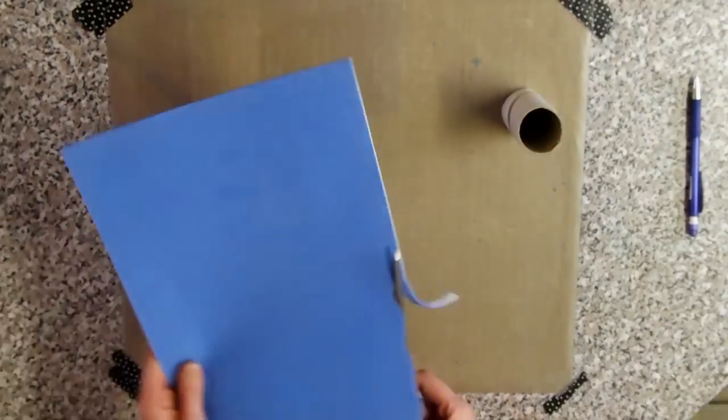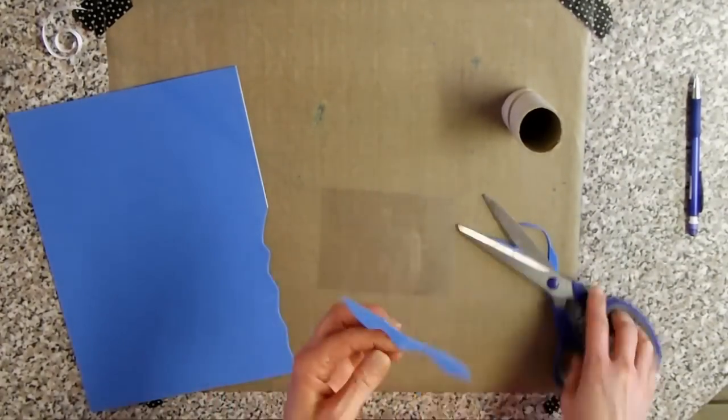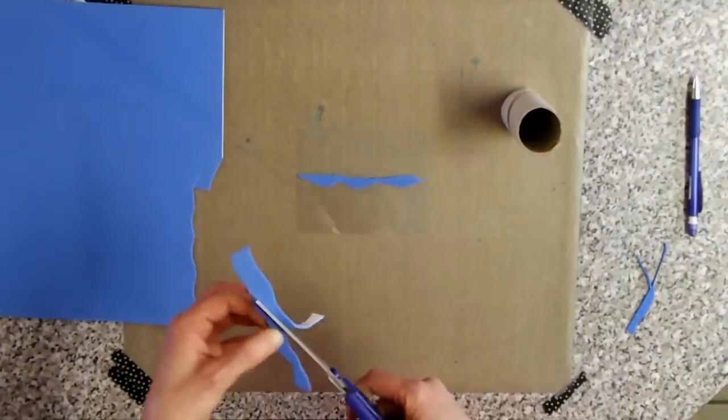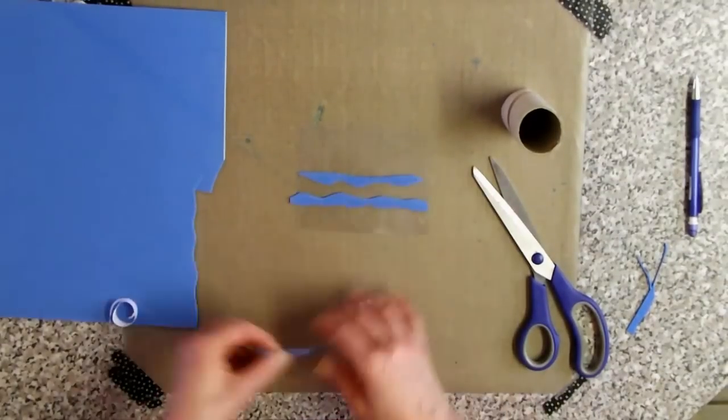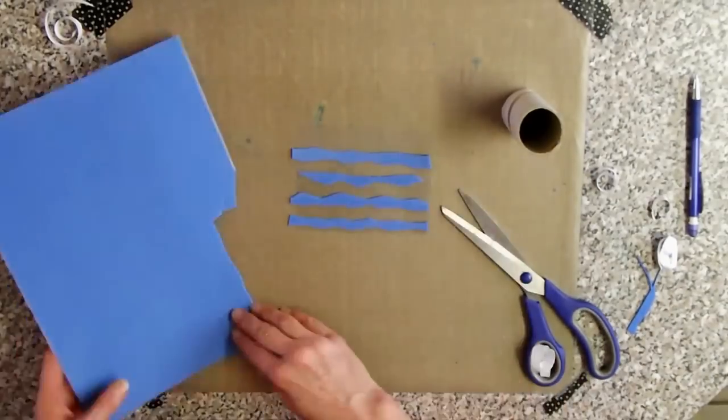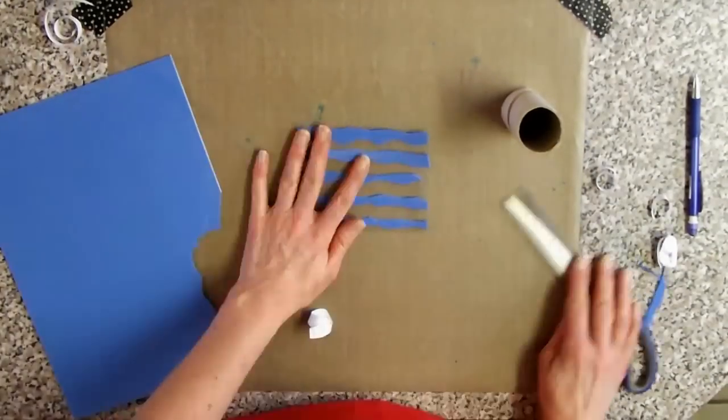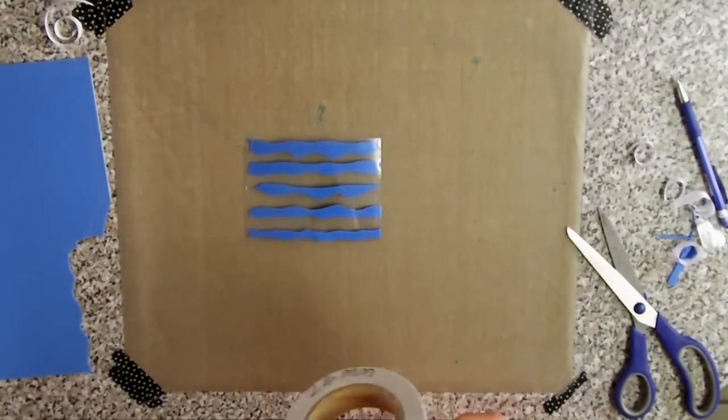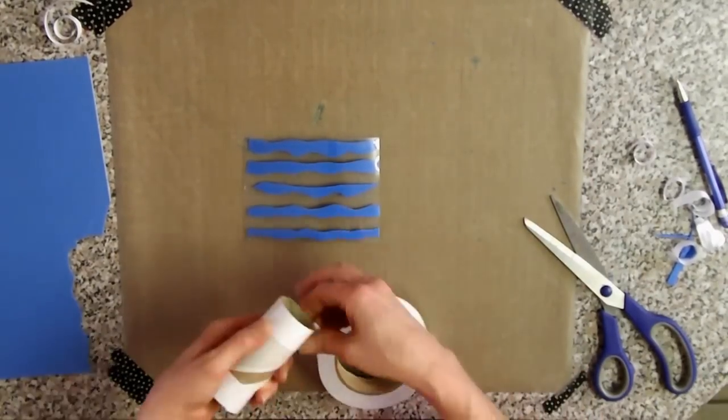Randomly cut shapes out of a sheet of peel and stick foam and adhere to the piece of acetate. Use double-sided adhesive tape to adhere the acetate to the cardboard roll.